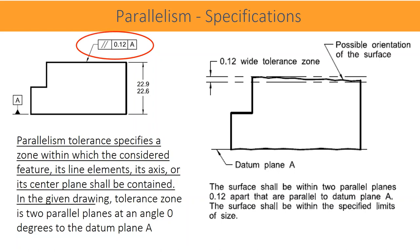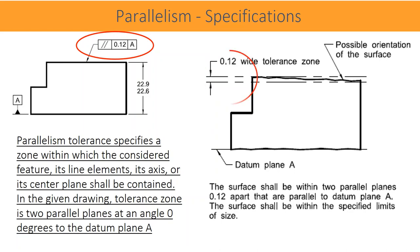In the given drawing, the tolerance zone is two parallel planes at an angle of zero degrees to datum plane A. The actual surface should be within two parallel planes 0.12 mm apart, that are parallel to datum plane A. Note that simultaneously the actual surface should also be within the specified limits of size.